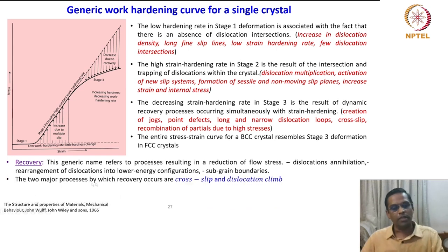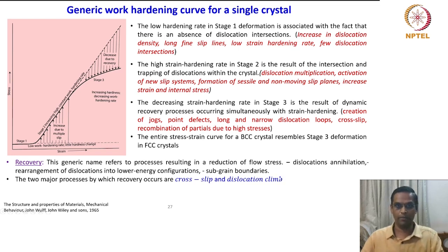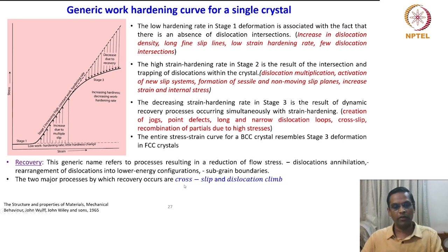The two major processes by which recovery occurs are cross-slip and dislocation climb. We have already seen what climb is — how a dislocation can move up or down depending on the circumstances. Recovery by itself takes place by these two primary mechanisms: cross-slip and dislocation climb.